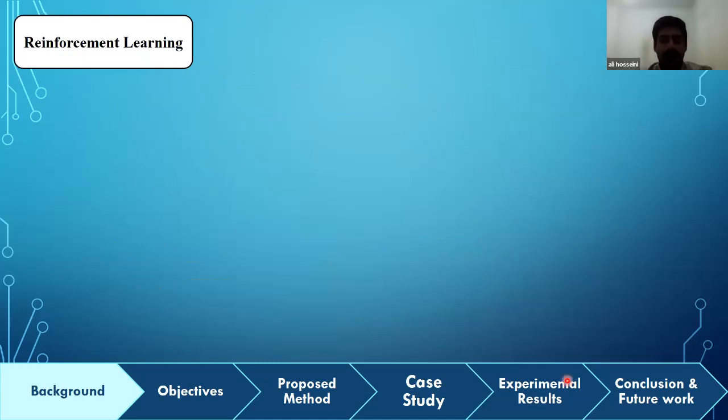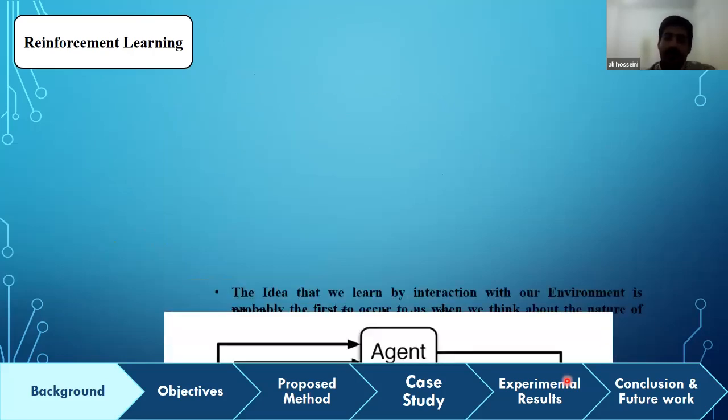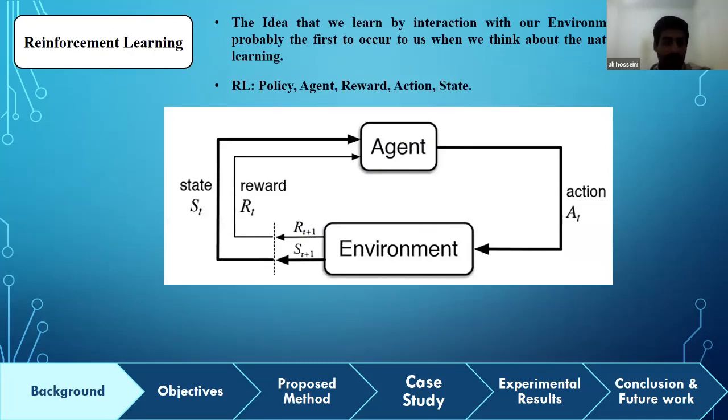In the last slide of the background part, I'm going to talk about the reinforcement learning algorithm. The first idea of this algorithm is that we learn by interaction with our environment. Reinforcement learning consists of five concepts: policy, agent, reward, action, and state. Policy says what to do in the next state, and agent is our controller that chooses the optimal action in every situation. Reward is the value of any action in any situation. As can be found in the middle of this slide, this algorithm has an agent or controller that frequently receives reward and state from the environment or system to choose an action according to them.